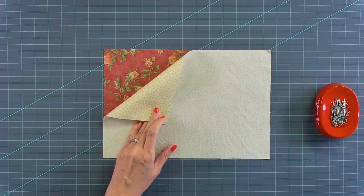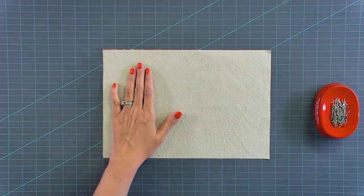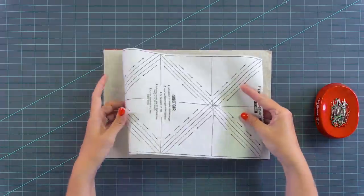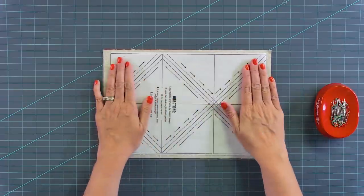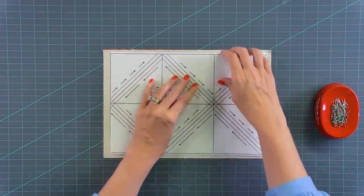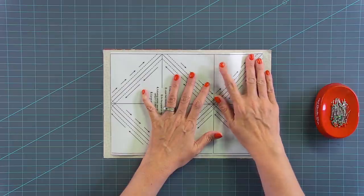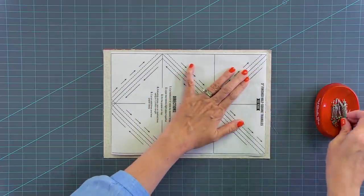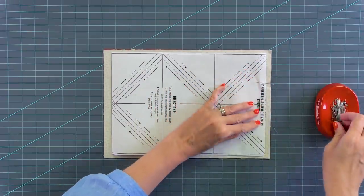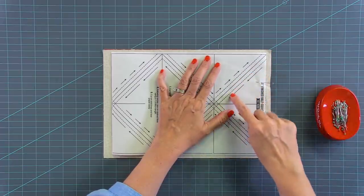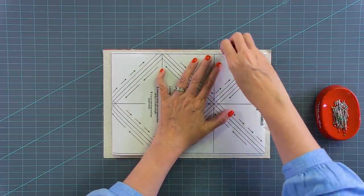You're going to layer your fabric A and fabric C rectangles right sides together and make sure there's no wrinkles in your fabric, and then you want your paper to lie nice and flat with no bubbles. If you pin it and you have a little hump in there you're going to get half square triangles that are the wrong size. So I like to pin a couple of times and you want to make sure your pins are not next to your stitched lines.